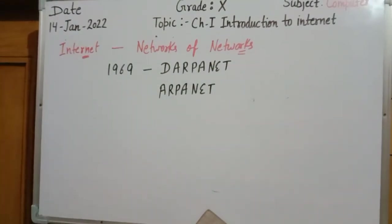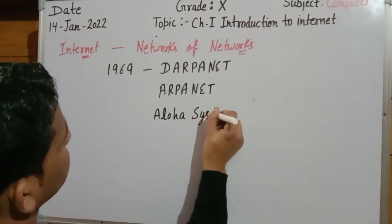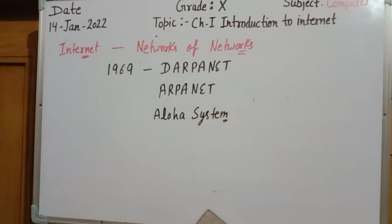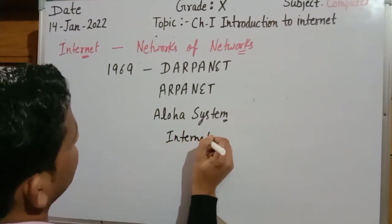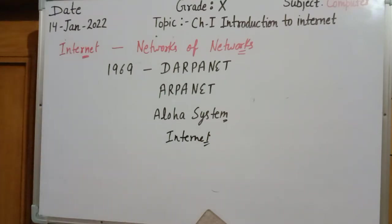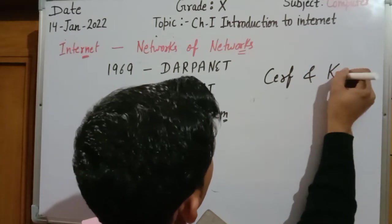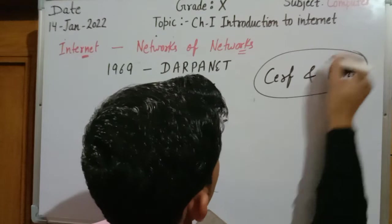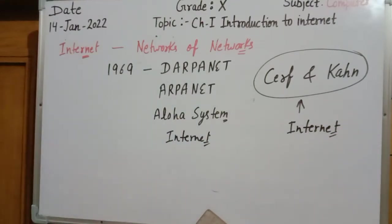To improve the quality of ARPANET, satellite signals were needed. To use satellite signal concepts, the ALOHA system was used. The ALOHA system is used for the purpose of satellite signal transmission, also known as linking the satellite network. Finally, it became the internet. The developers of the term internet were Cerf and Kahn.